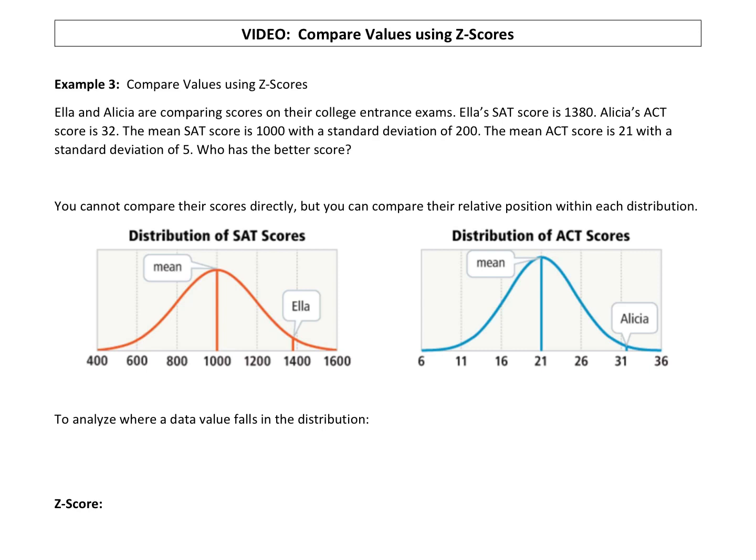We get to learn about z-scores in this example, but let's look at the situation and then we'll get to what a z-score is. Ella and Alicia are comparing scores on their college entrance exams. Ella's SAT score is 1380, Alicia's ACT score is 32. They're trying to compare two different tests. Who did better on their test? I don't know how an SAT score of 1380 compares to an ACT score of 32.